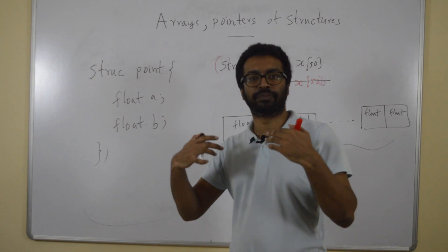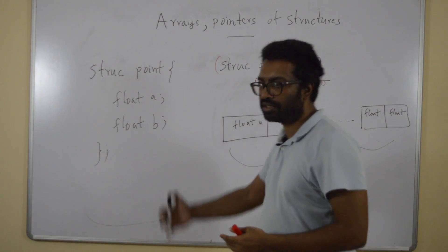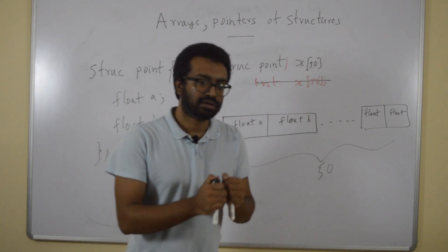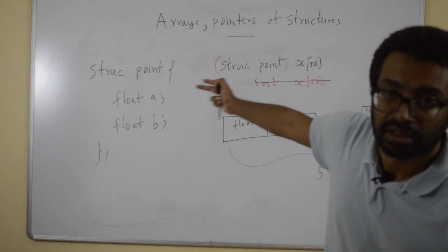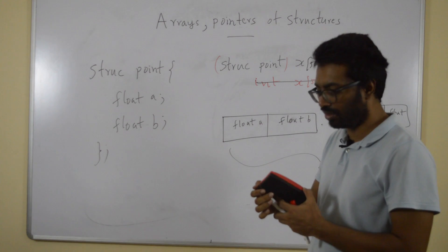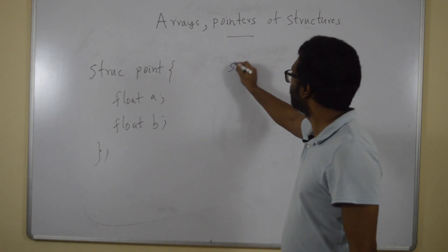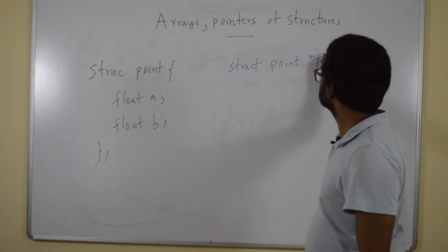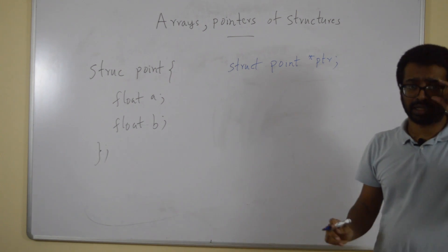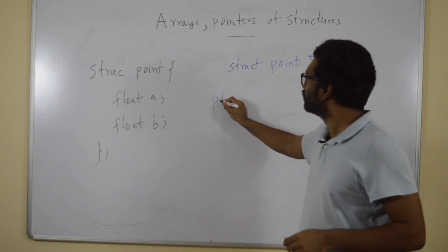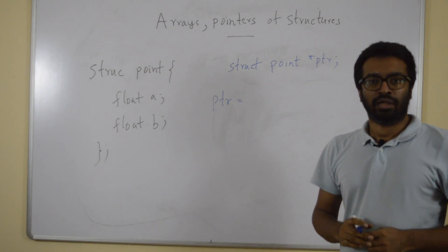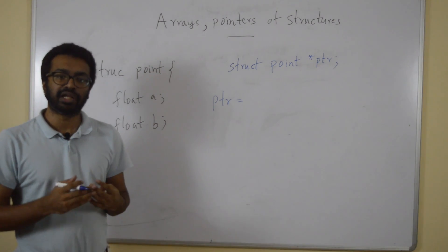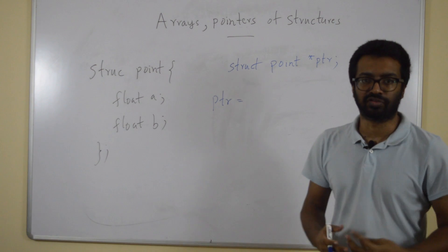For that, first of all, I will have to create a pointer to a struct and to that pointer, I am going to allocate memory for 50 struct points. So let's see how to do that. I will first create a pointer. Now, how do we allocate memory dynamically? We know using memory allocation or malloc function.